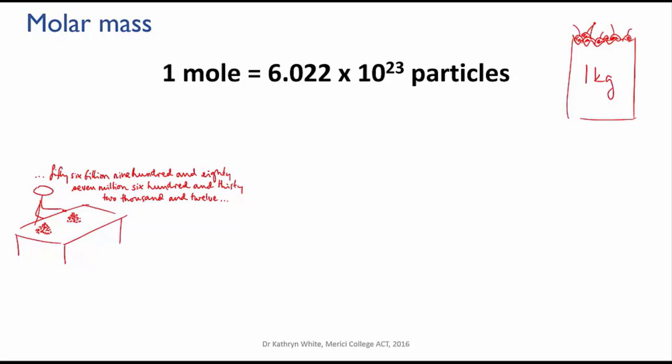The same principle applies in chemistry. We do know how much atoms weigh, so we can work out how much one mole of those atoms weighs. And we can then convert between the mass of a sample of, say, carbon, and how many moles of atoms are in that sample.